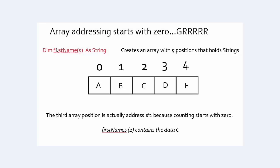We have a couple of different ways to declare arrays. The first: we do the name and tell how many positions we need. If we have five pieces of data, we need a five-position array. If we do this, our counting starts with zero. So the third piece of data is actually in the second array address, and array address number three holds our fourth piece of data. So our counting is off by one, which can cause grief.